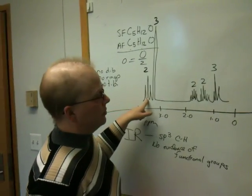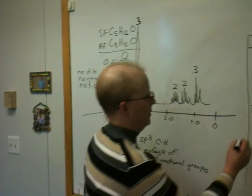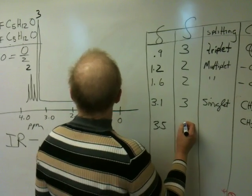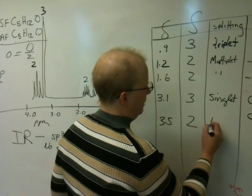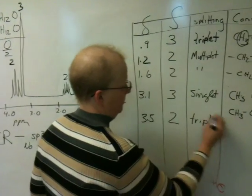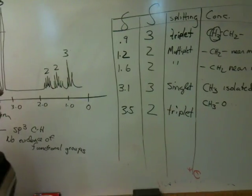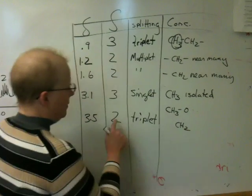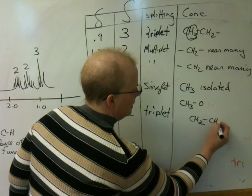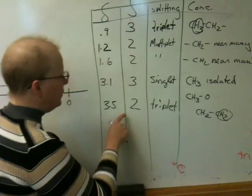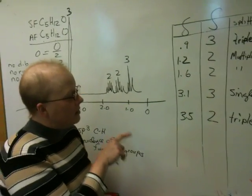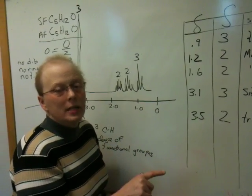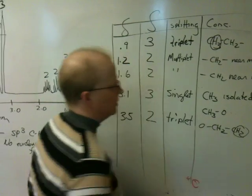Now I go down here and there's another two. This is at about 3.5. Area of 2, triplet. It's a clean triplet. This is saying I have two hydrogens. That's a CH2 that are next to 2. And if you're being a little more sophisticated, you would conclude that that 2 is next to oxygen. This is an important step to take in your NMR solving. So I'm going to put the O here.